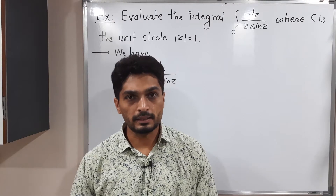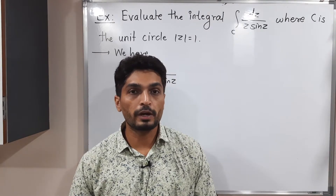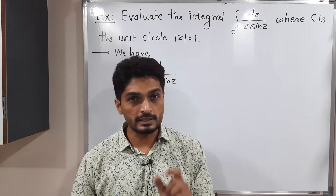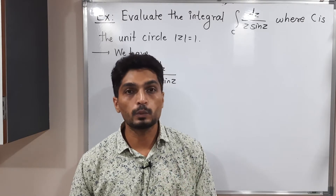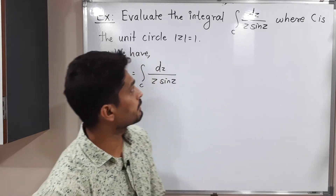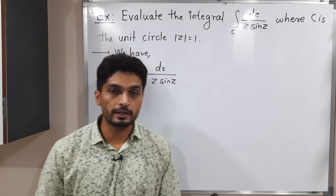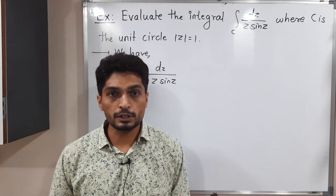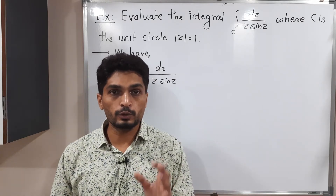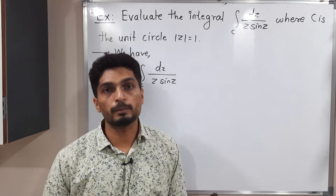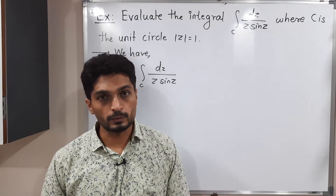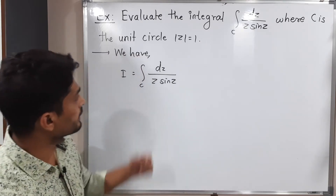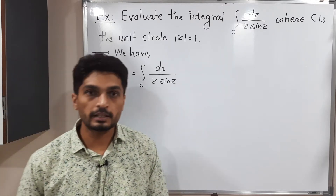Let us discuss this example. We have to find the value of integration where C is a curve |z| = 1. This is the equation of a circle with center at the origin and radius 1. We are going to use Cauchy's residue theorem to find its value. This is the given integral.